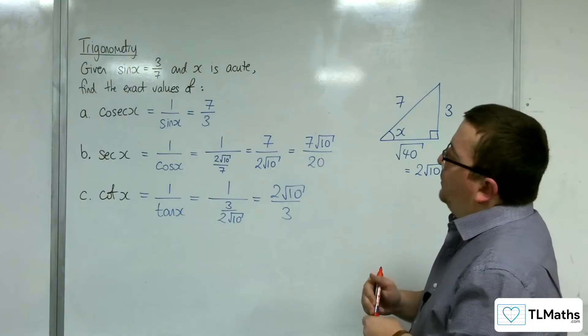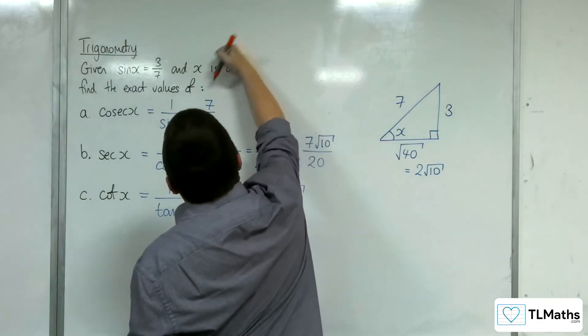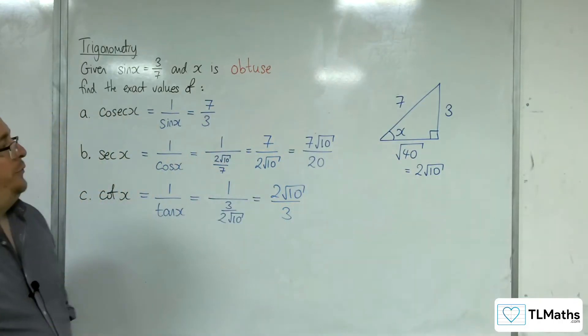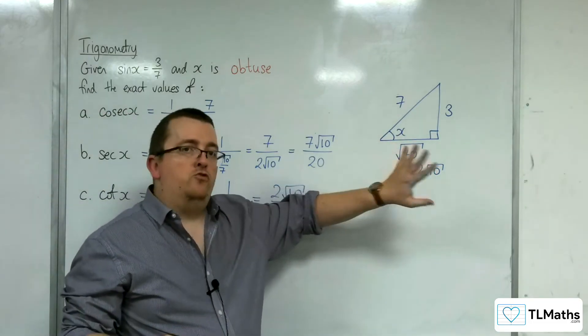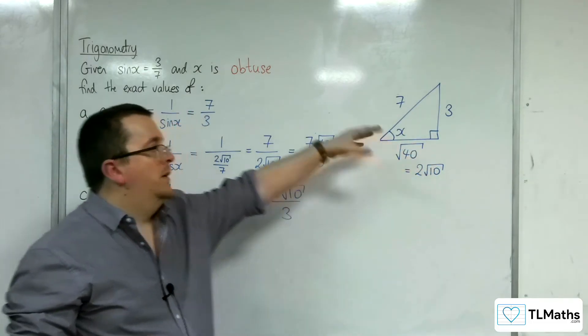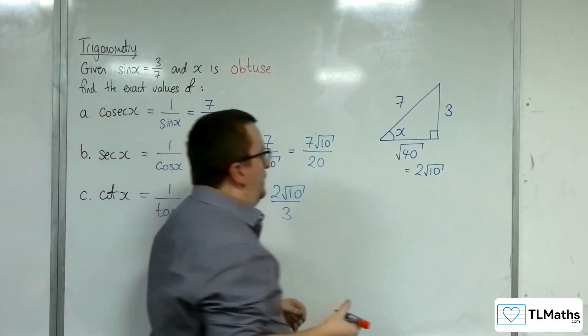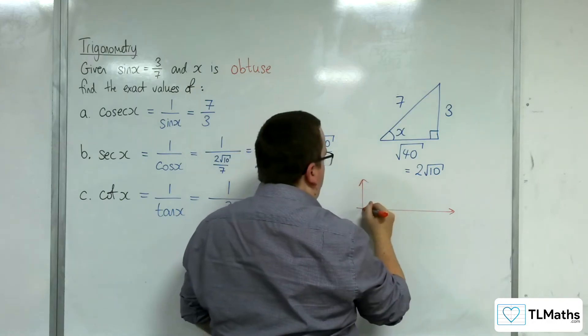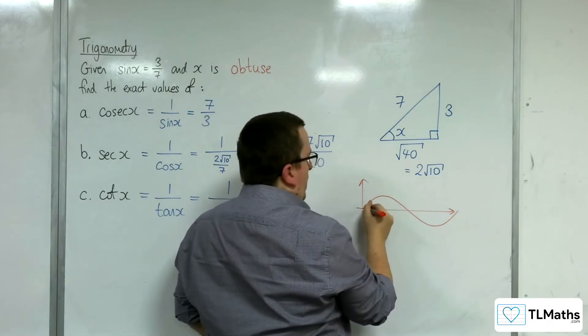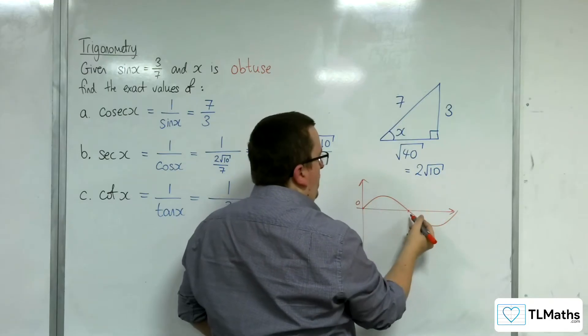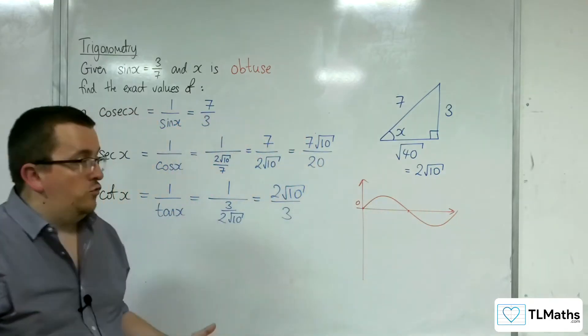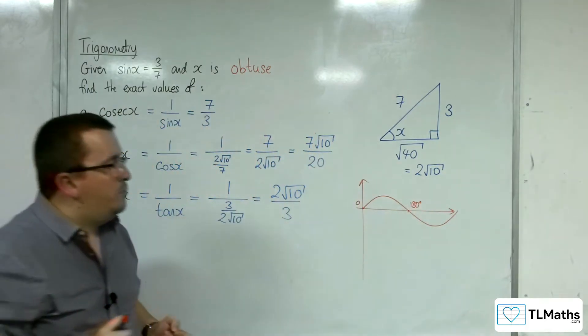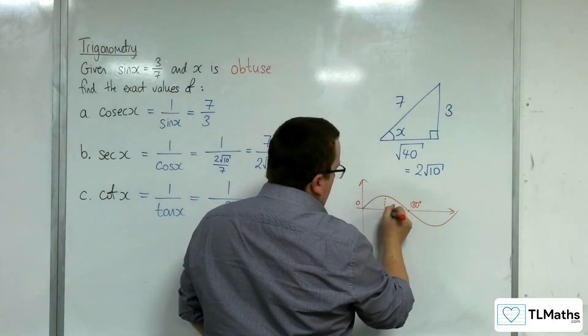I said I would also go through if x were obtuse. I would still draw the same right-angled triangle. But now, looking at sine on a graph, here's 0 and 180 degrees. We'll keep it in degrees because we recognize acute and obtuse better in degrees. Here's the 90-degree mark.